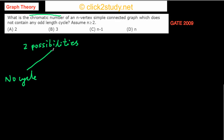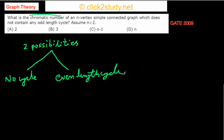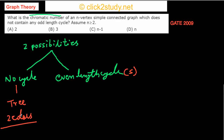The second possibility is that it contains only even-length cycles. Let's handle each case. If there is no cycle at all, that means the graph is a tree. We know that trees can always be colored with just two colors, so the chromatic number of a tree is two. This is a standard theorem and it's quite easy to see why.